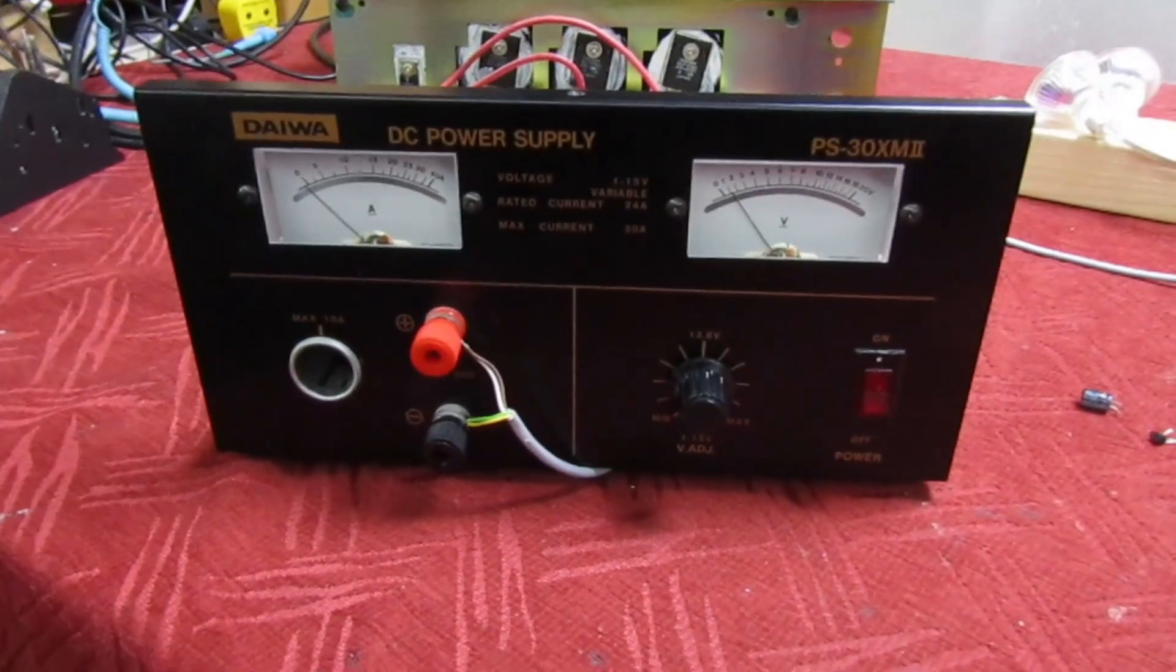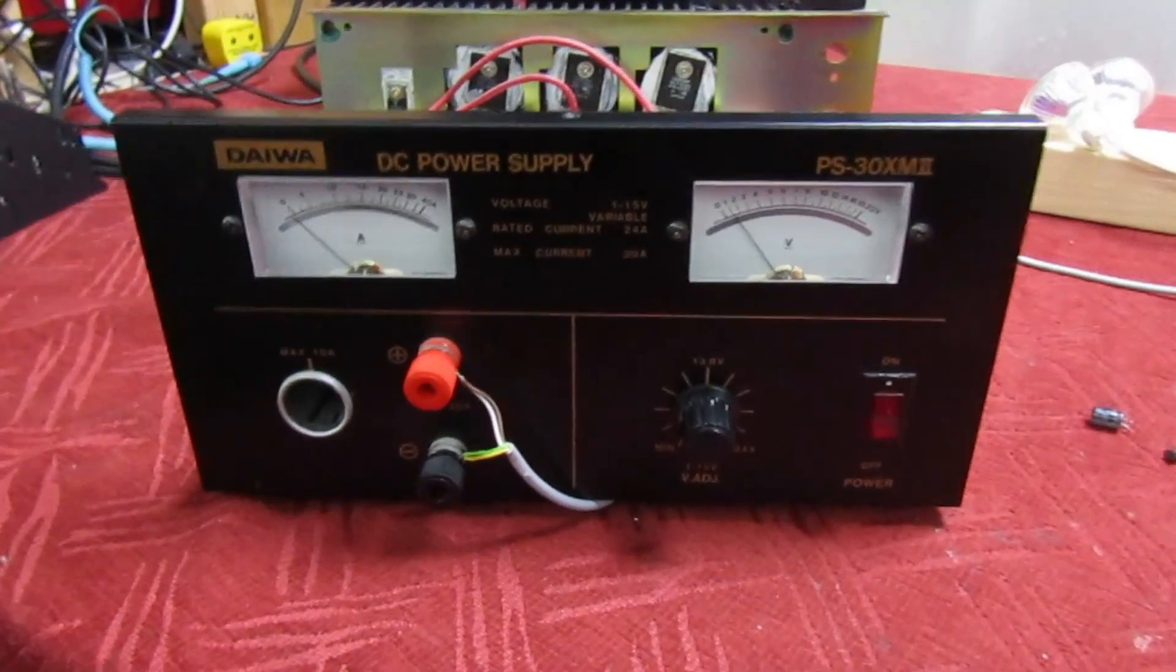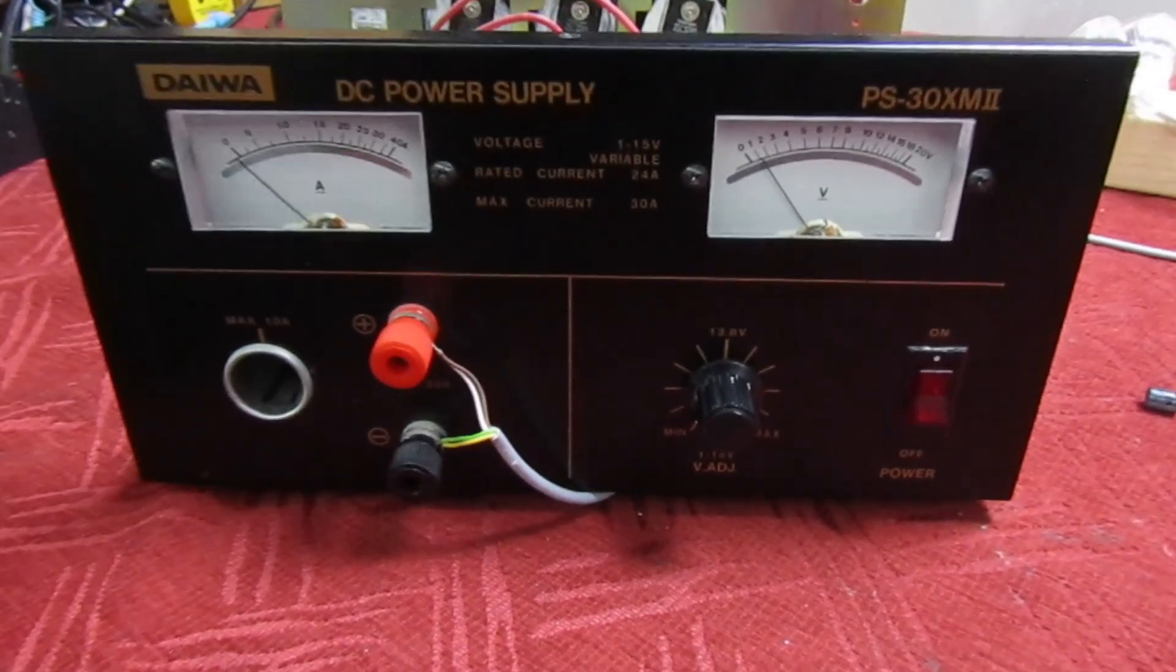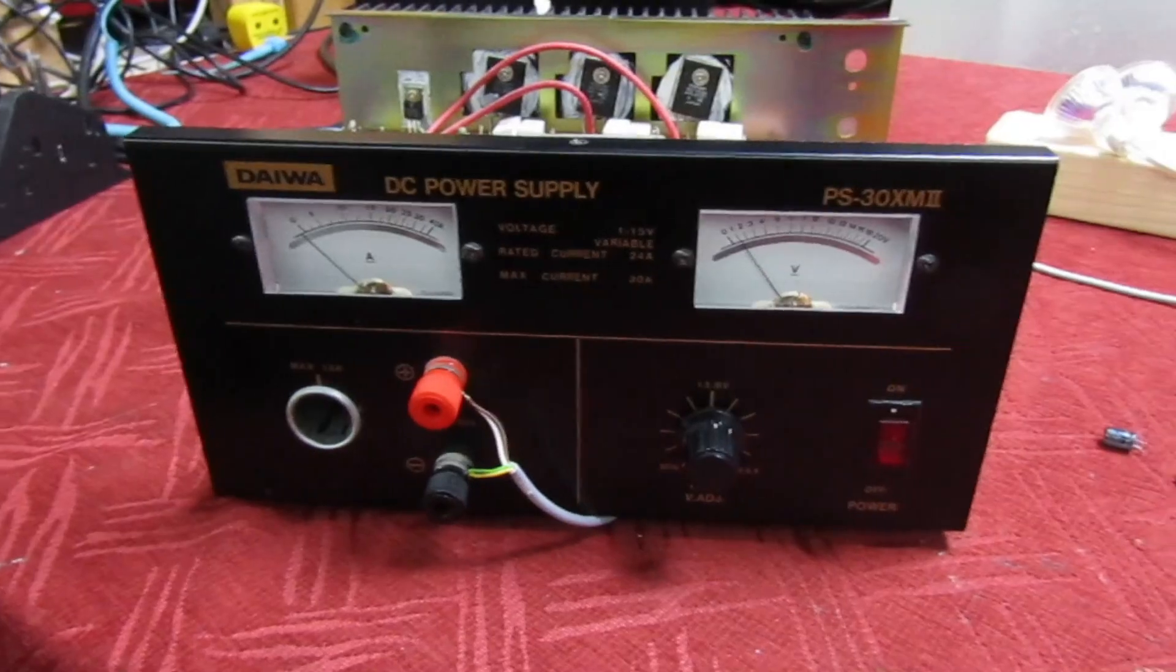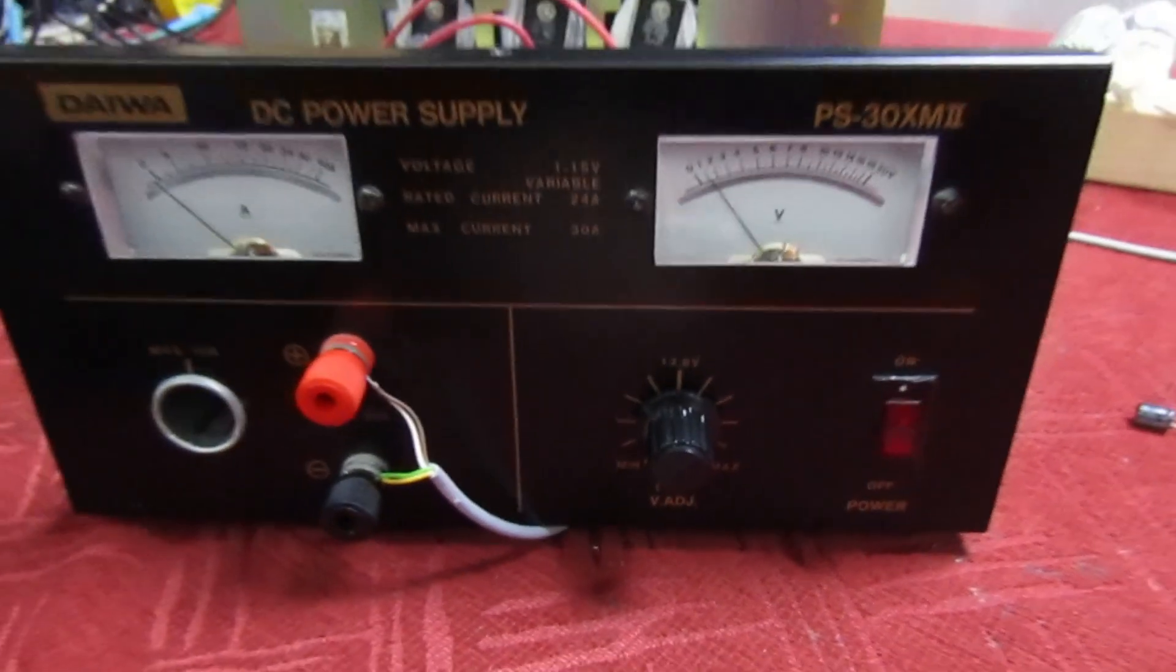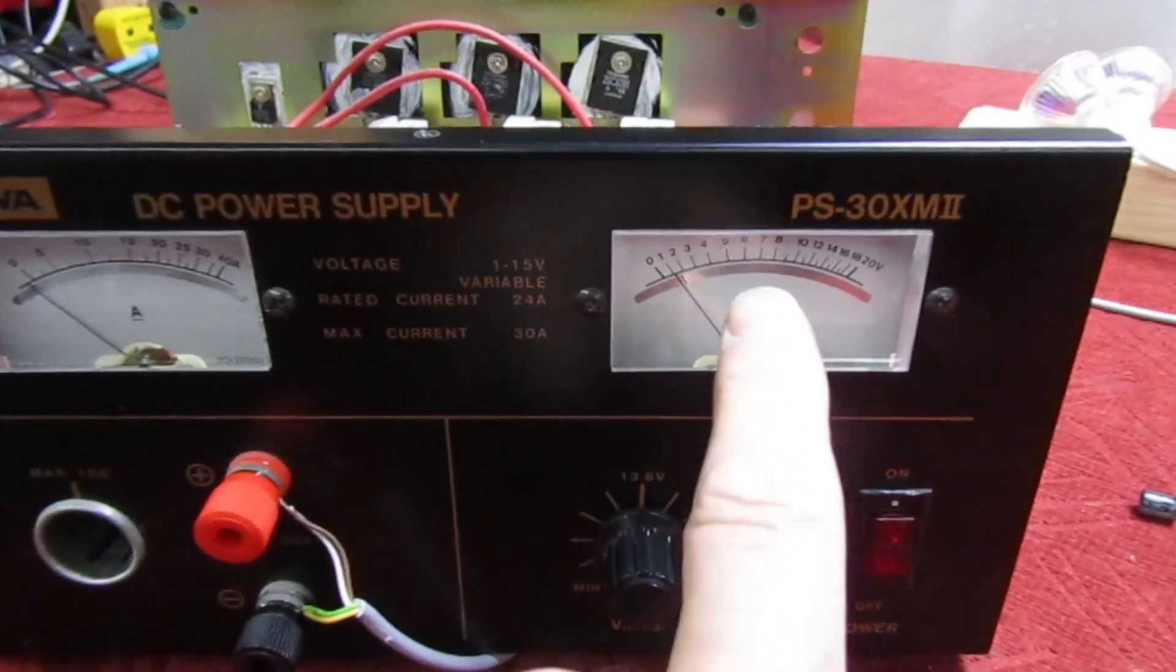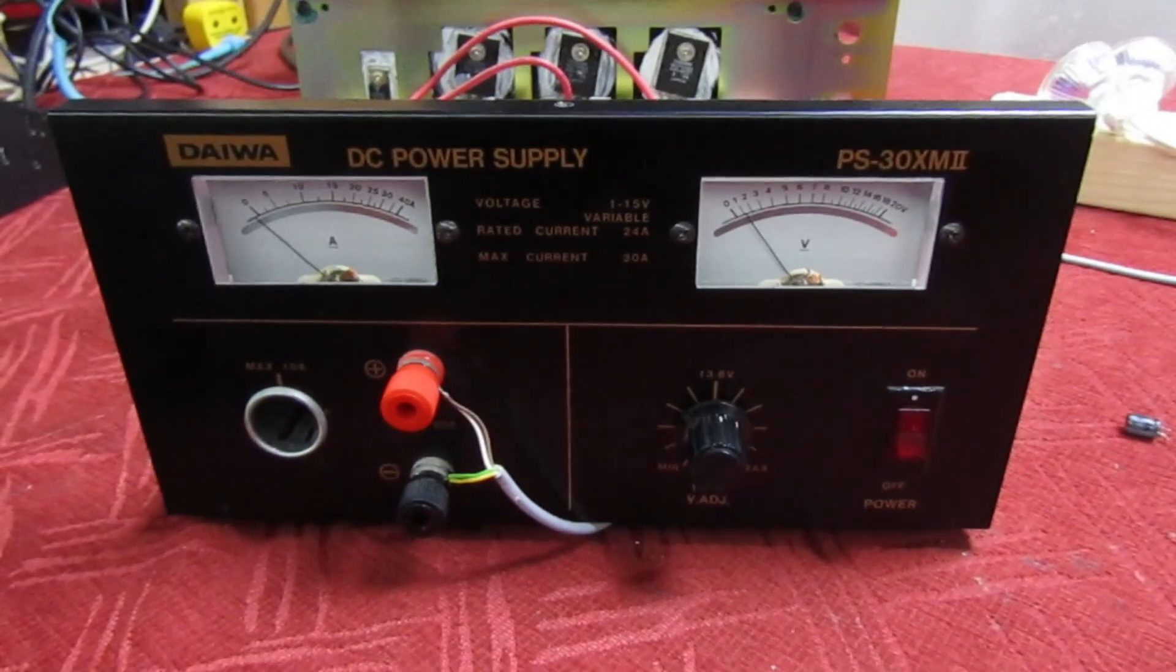Hi guys and girls on YouTube, welcome to my channel. This is a really quick video for all you component level fault finders. This 30 amp variable power supply belongs to a friend of mine who is a radio ham. He said he's showing 12 volts on here and the receiver is working all right.